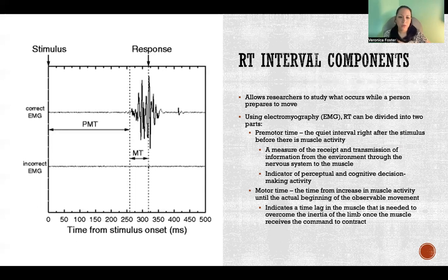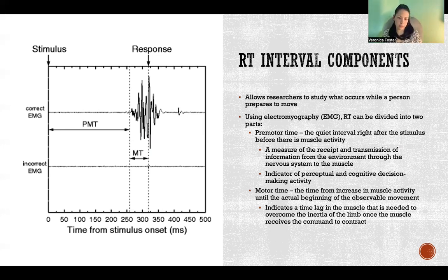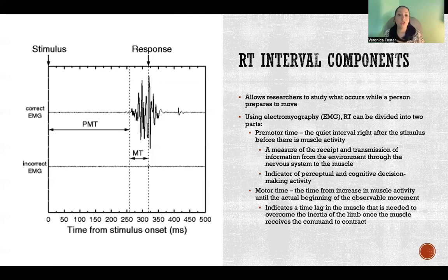So the pre-motor time is before there is a response in the muscle. So it's a quiet interval. It's first, it's right after the stimulus or the go signal, and it goes up until there is muscle activity. So there's no muscle activity during that initial part. So that is a measure of the receipt and transmission of information from the environment through the nervous system to the muscle. So we have to perceive the go signal or whatever the stimulus is in the environment. We have to perceive it. The nervous system has to then transmit whatever is going to be the signal for the response to the muscular system. So that all takes time for that whole perception and decision-making process to take place, and then for that motor command to be sent out to the muscle. So during that kind of window, there's no actual muscle activity yet because the muscles didn't receive the signal yet.